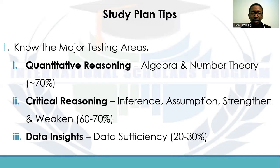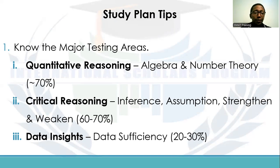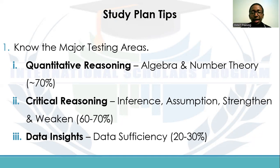The first tip is to know the major testing areas. This applies to all areas of the sections — Quantitative Reasoning, Verbal Reasoning, and Data Insights. Knowing these areas will help you know where to concentrate, and also identify other areas that you just have to prepare for but not as intensely. For Quantitative Reasoning, we have algebra and number theory constituting about 70 percent of the section.